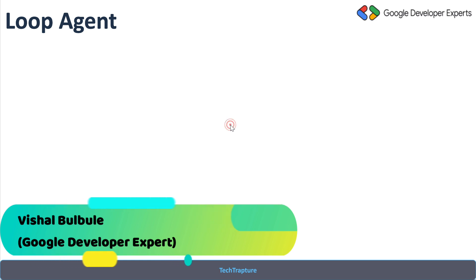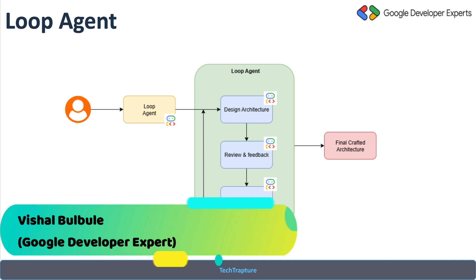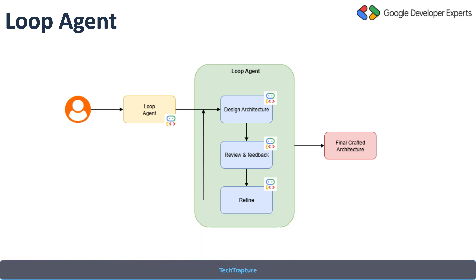In this video we are going to implement one more use case — we will create an architecture design agent that will design a cloud architecture and run in a loop. There will be one loop agent which will have three sub-agents that run in a loop.